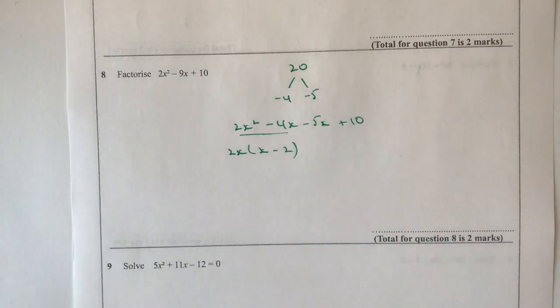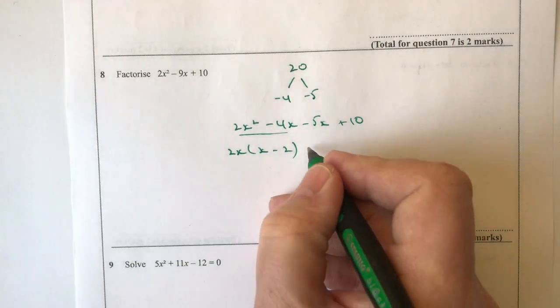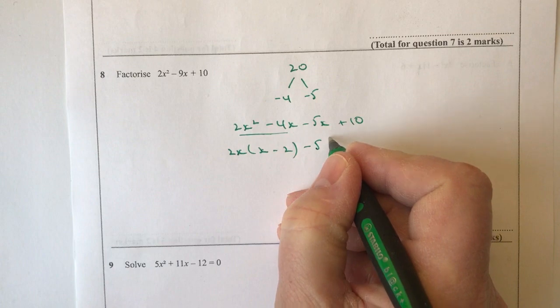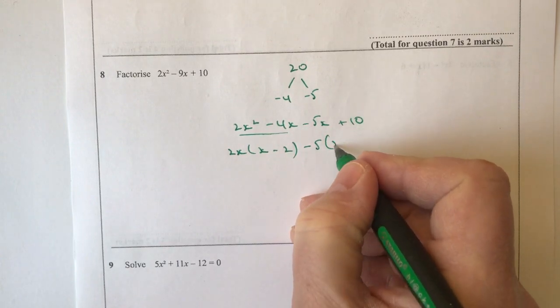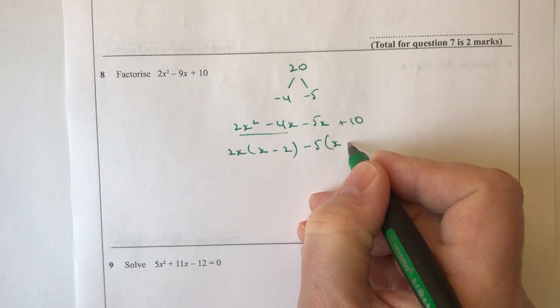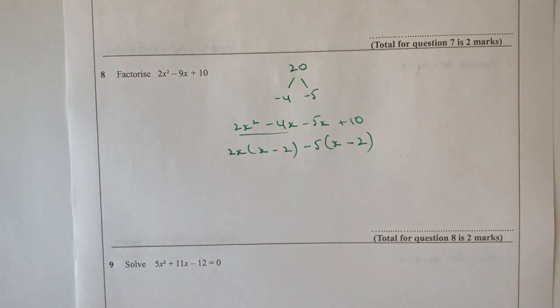And I can do exactly the same with the second two terms. And this time, I'm going to factorise for minus 5. So that's going to give me x. Now be careful here, it's going to give me x minus 2 again.